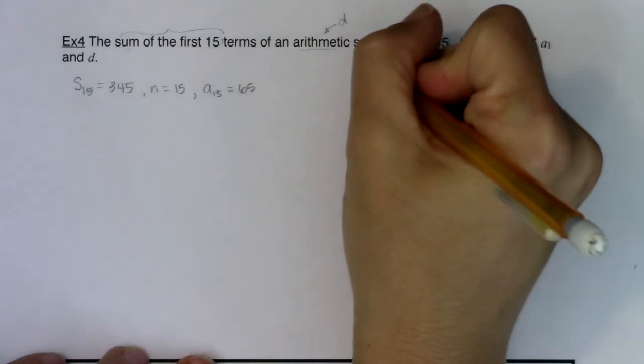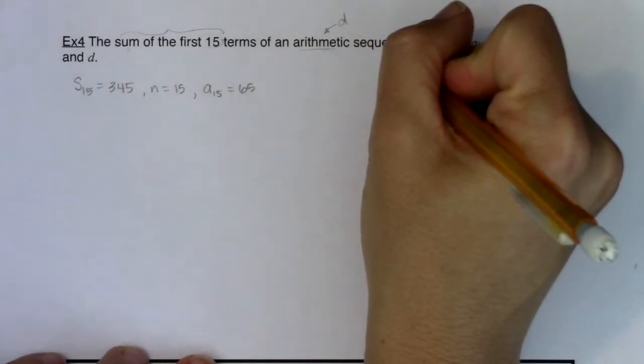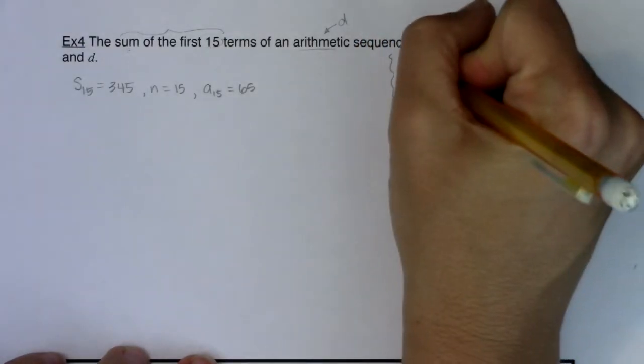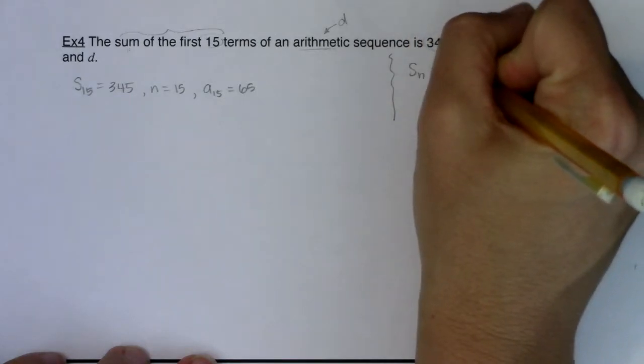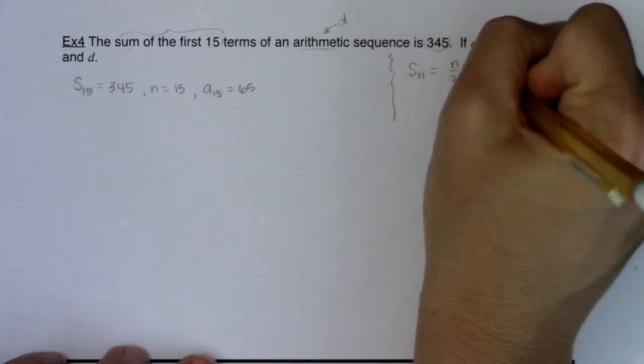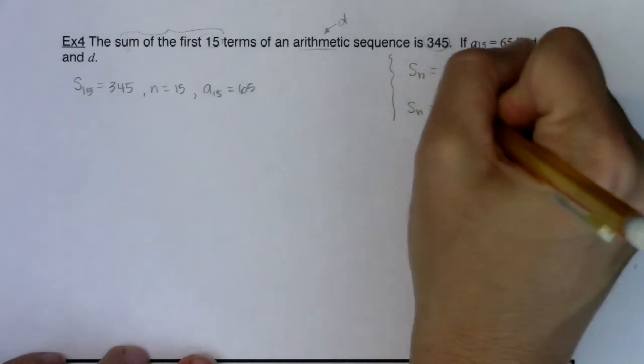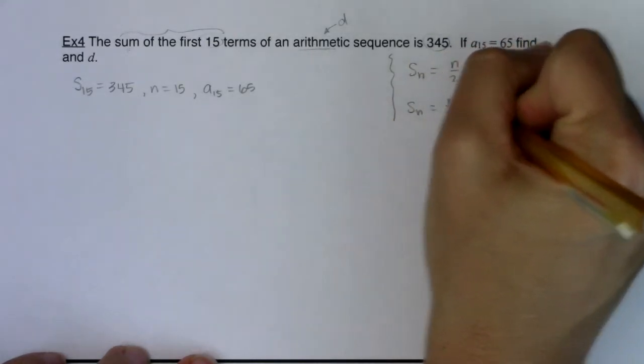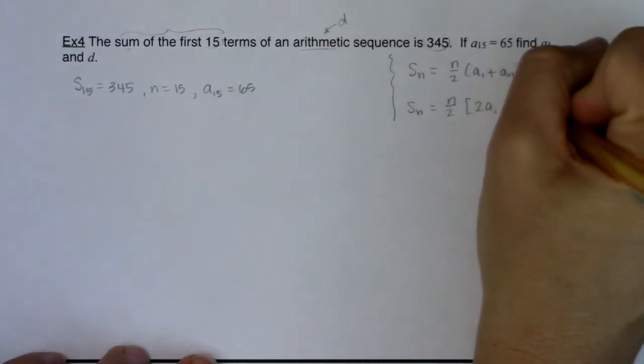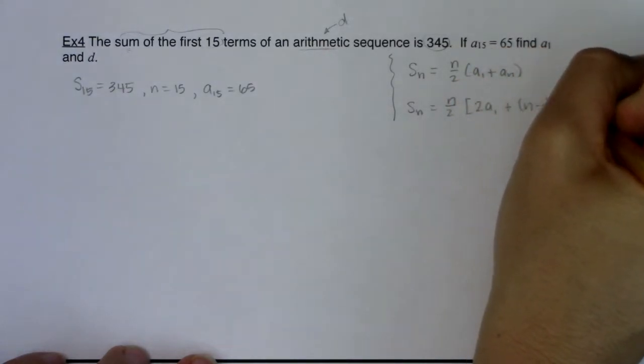So I'm going to put this over here, and I want to remind us, the two formulas we have are s sub n is equal to n over 2 times a sub 1 plus a sub n, and then we also had s sub n is equal to n over 2, 2 times a sub 1 plus n minus 1 times d.